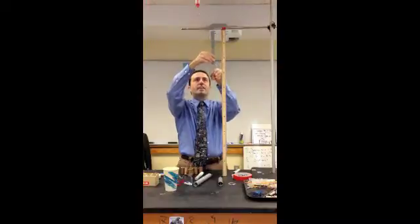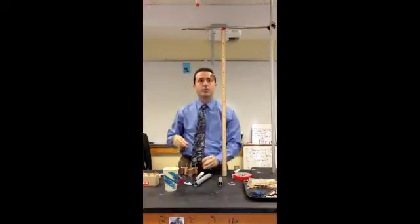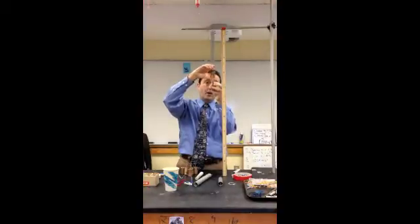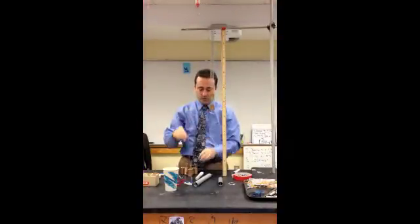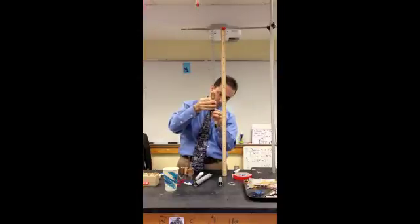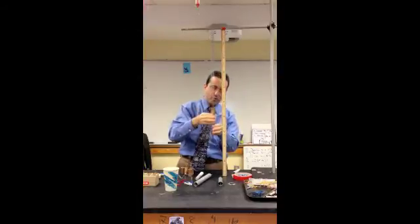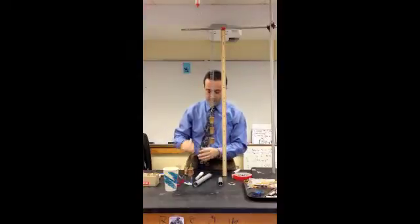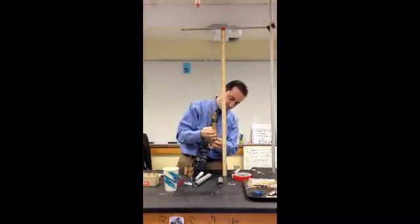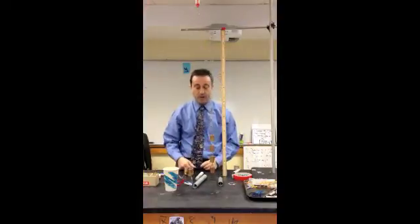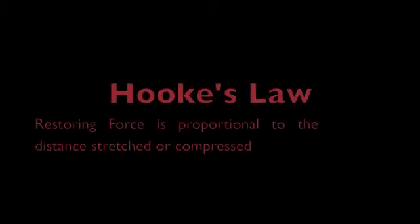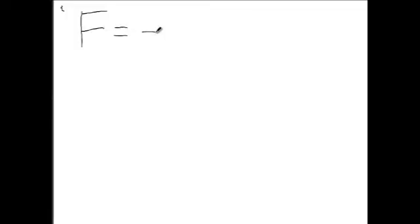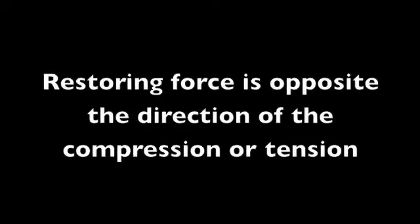Here you can see what happens as I hang several 200 gram weights off of this spring. It stretches more and more, and the amount that it stretches is proportional to the weight which I hang off. Robert Hooke came up with a rule to describe this behavior: the force in the spring is directly proportional to the distance either stretched or compressed, attempting to restore the equilibrium position.